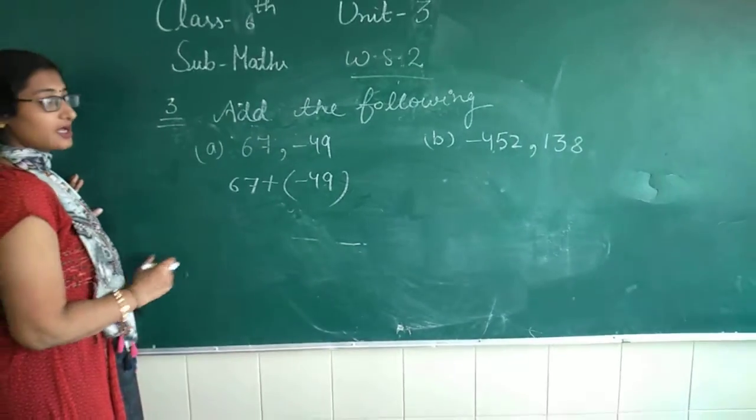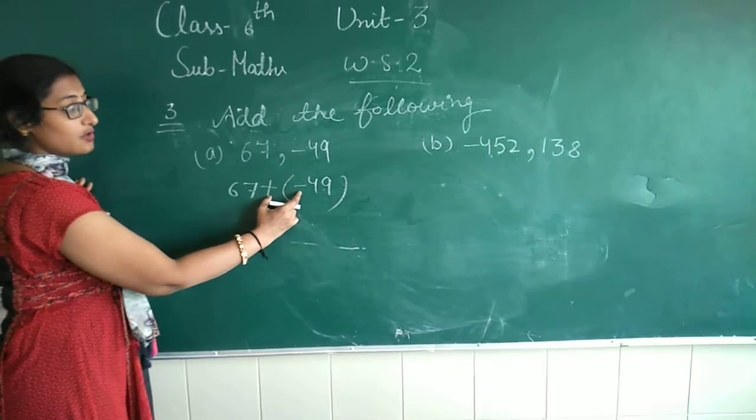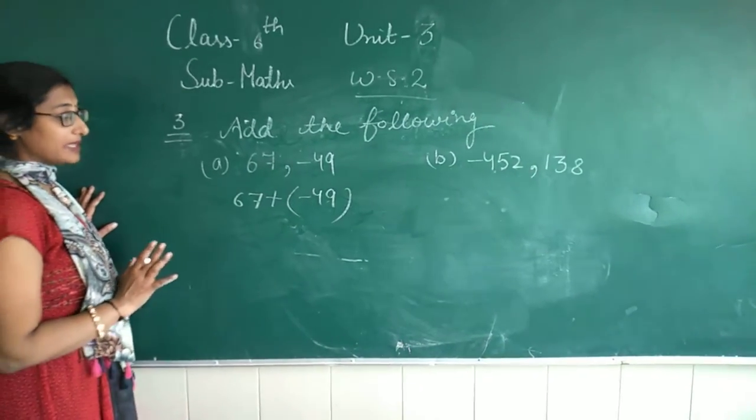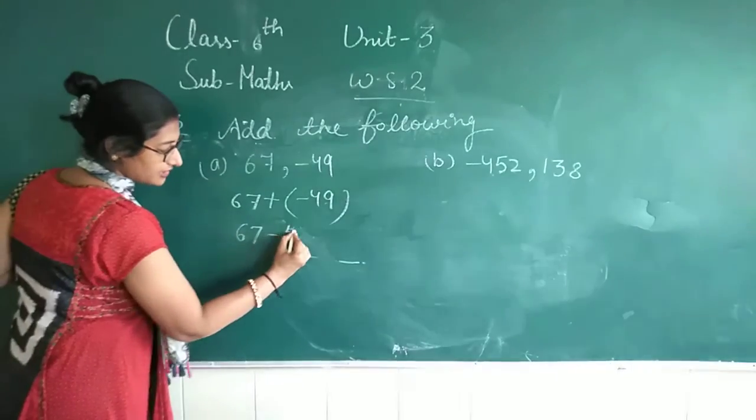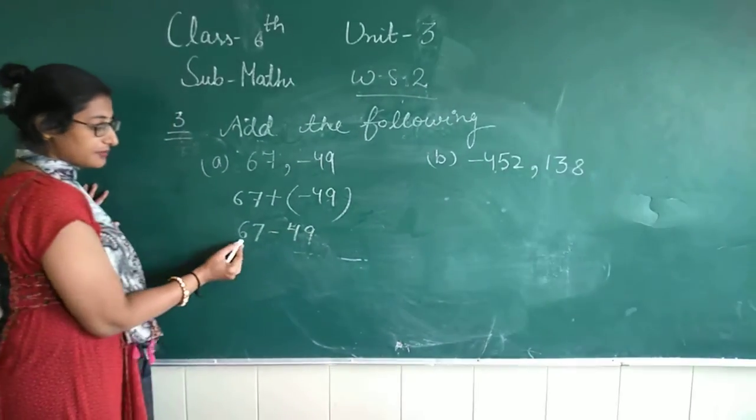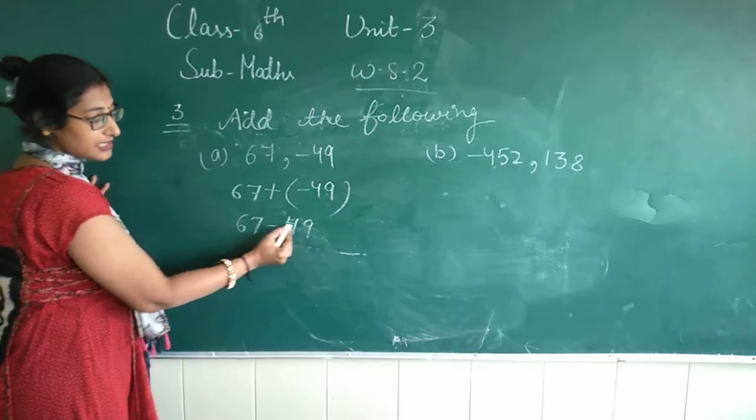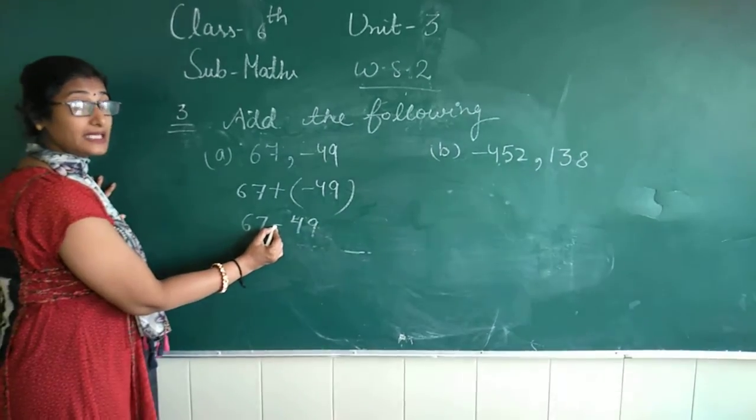Jab do opposite signs ho, tab hamesha kya hota hai? Minus hota hai. Plus, minus, minus. So, 67 minus 49. Ab 67 plus ka hai, ye minus ka. Plus, minus, minus.